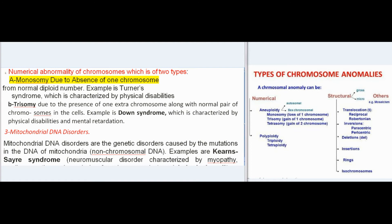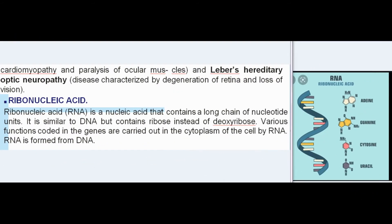Mitochondrial DNA disorders are genetic disorders caused by mutations in the DNA of mitochondria (non-chromosomal DNA). Examples include Kearns-Sayre syndrome — a neuromuscular disorder characterized by myopathy, cardiomyopathy, and paralysis of ocular muscles — and Leber's Hereditary Optic Neuropathy, a disease characterized by degeneration of the retina and loss of vision.